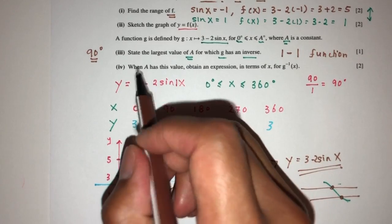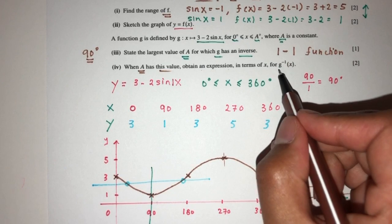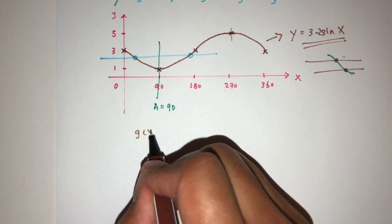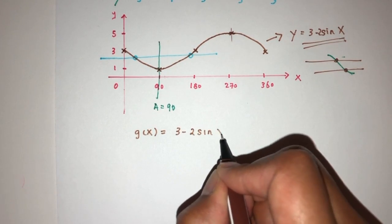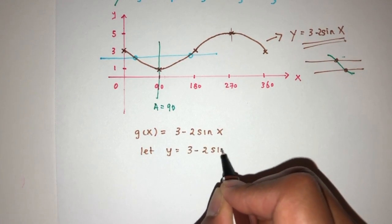Now for part four, when a has this value, which is 90, obtain an expression for inverse. So let's find out. So we know that g of x is equal to 3 minus 2 sin x. First thing first, let y equal to 3 minus 2 sin x.